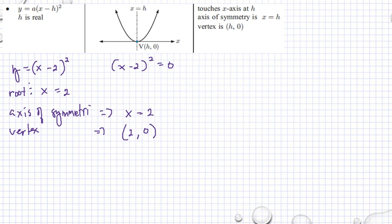Another example is when I have y equals x squared. I know that my root is x equals 0, because x minus 0 squared equals 0. My h here is 0. As you can see, your root is h.